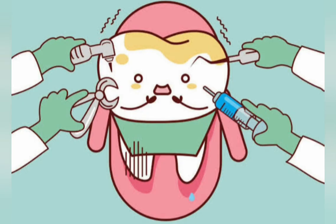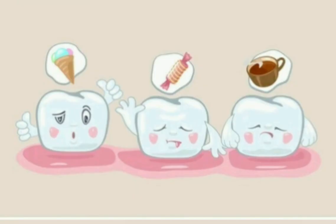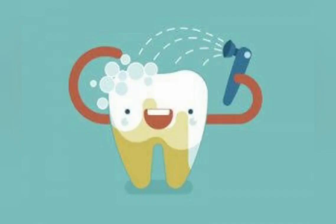Early treatment is less painful than treatment of extensive decay. Dental caries can be treated by various methods including fluoride treatment, fillings, crowns, root canal, and in severe cases, tooth extractions. Dental caries can be prevented by avoiding sugary foods and drinks which feed bacteria in your mouth, and by brushing regularly with fluoride toothpaste. Fluoride helps prevent cavities by slowing enamel breakdown. Flossing daily after meals removes food particles from between your teeth, promoting healthy teeth and healthy gums.